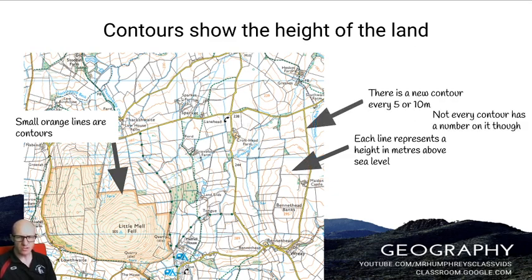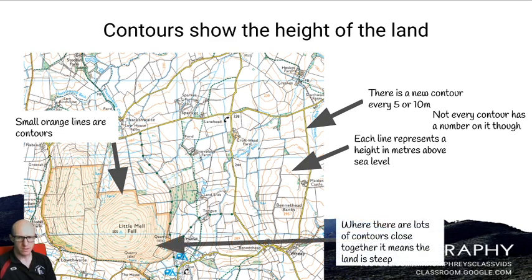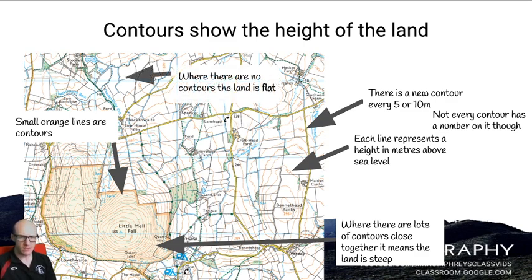There is a new contour line every five or ten meters. Some of them have numbers on, but not every one. Where there are lots of contours close together, it means the land is getting steeper. Where there are no contours and areas of white, that means the land is flat.